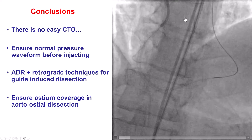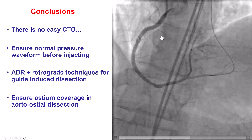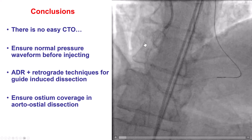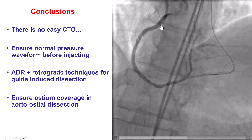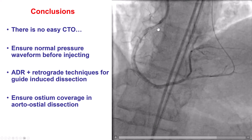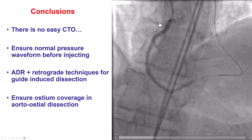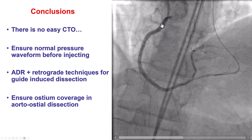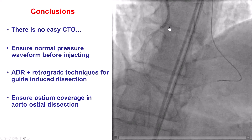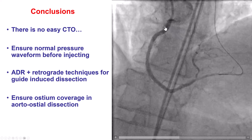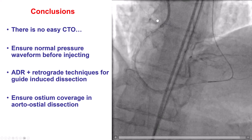Finally, when we have an aorto-ostial dissection, as in this case, it is important to stent all the way to the aorta, protruding 1–2 mm into the aorta and making sure that the ostium is well covered, to avoid any propagation of the hematoma into the ascending aorta.